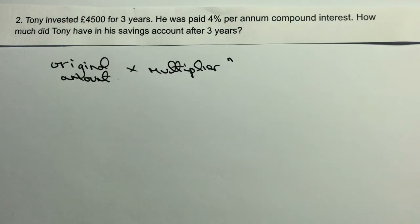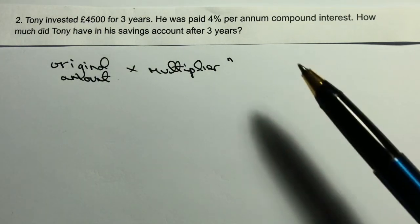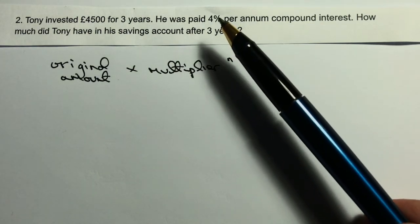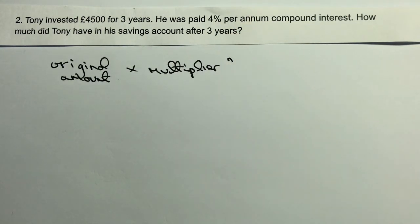The important thing with this is to have a look at the multiplier itself. In order to do that, if you look at the question, it says that he was paid 4% per annum compound interest — it's this here, 4%.